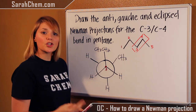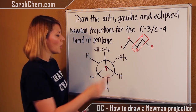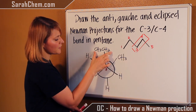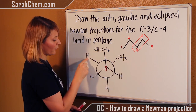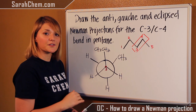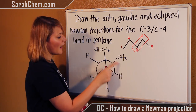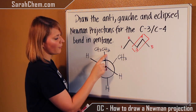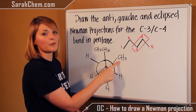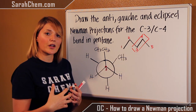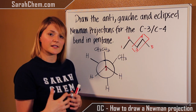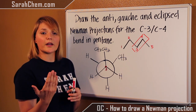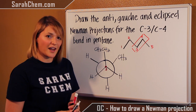There are two ways you could draw the gauche — one with the ethyl and methyl adjacent on one side, or on the other side — either is fine. This conformation is higher in energy because the large electron cloud of the ethyl group and the electron cloud of the methyl group are closer to each other, causing repulsive forces. Whenever repulsive forces between electrons increase, so does the energy.